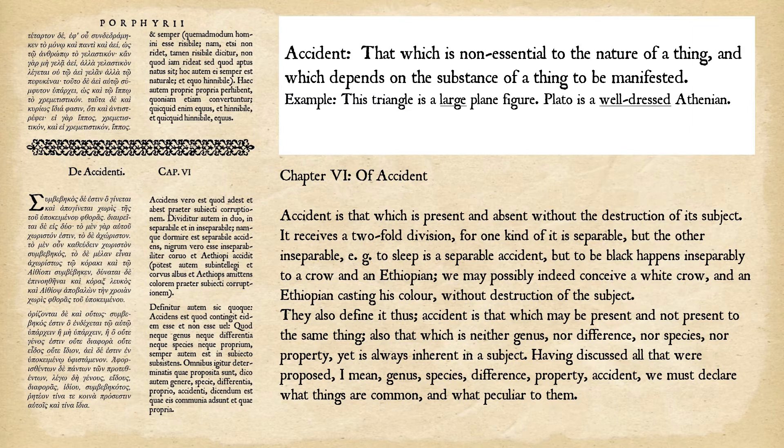A separable accident is the type that may or may not be the case at any given time, yet it's still an accidental description of something. Sleeping — being asleep — is an accident, because you don't have to be asleep to still be who and what you are. Sometimes you might be asleep and sometimes not. Or to be cold or hot — these things change by time and circumstance, so they're separable.